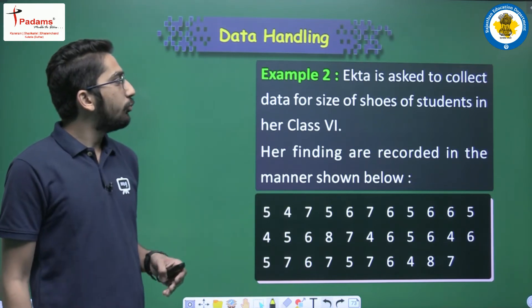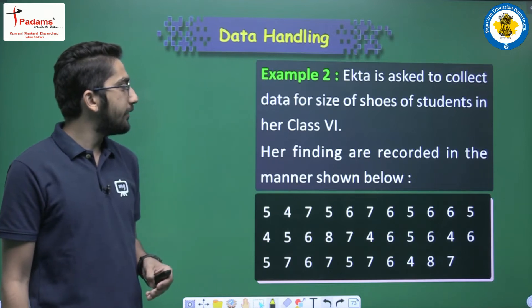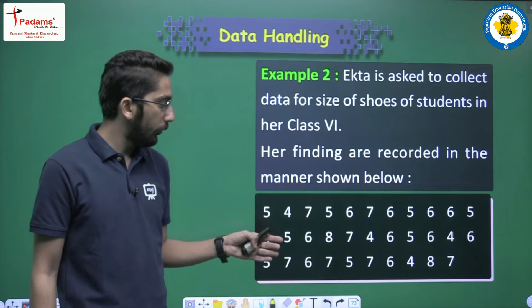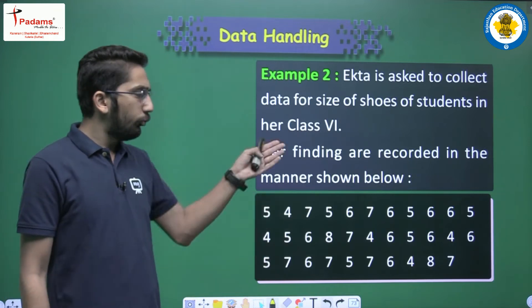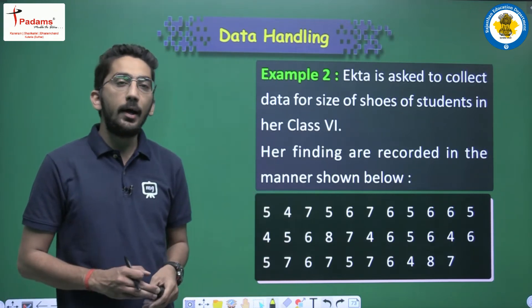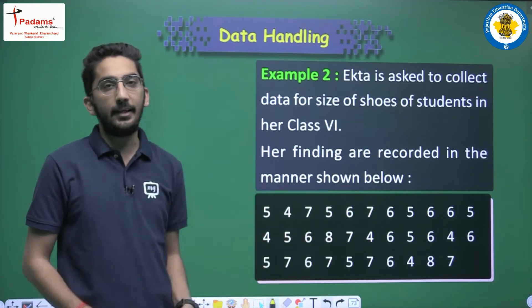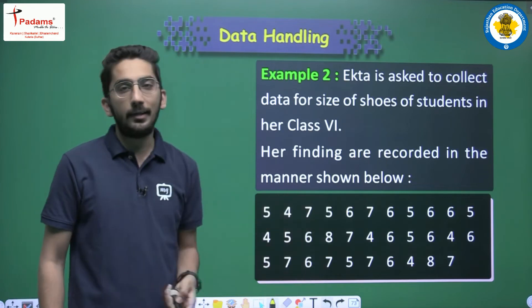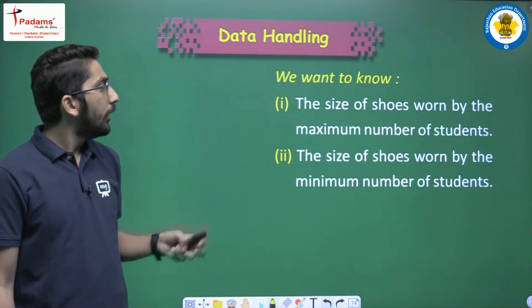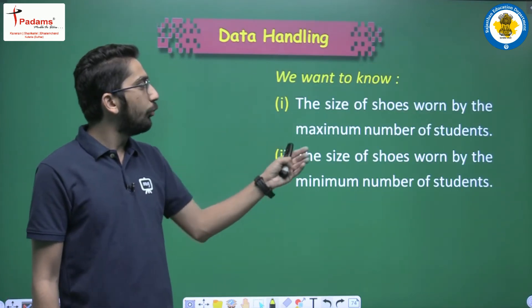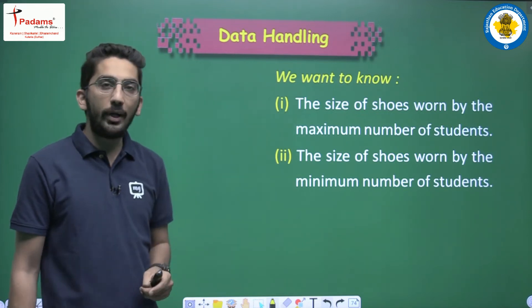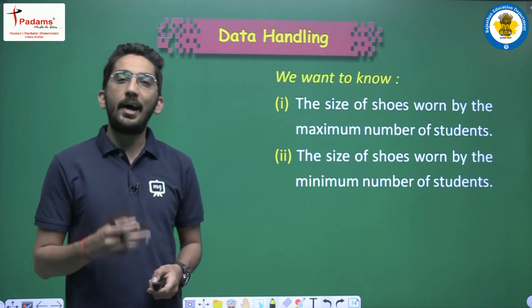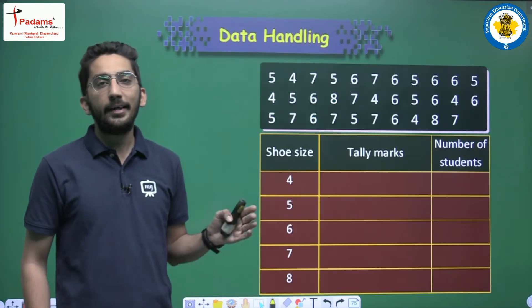Now an example: Ekta is asked to collect data for the shoe sizes of students in her Class 6. Her findings are recorded in a list showing sizes like 5, 4, 7, 5, and so on. We want to know the size of shoes worn by the maximum number of students and the size worn by the minimum number of students. The shoe sizes available are 4, 5, 6, 7, and 8. Let's arrange the given data using tally marks.